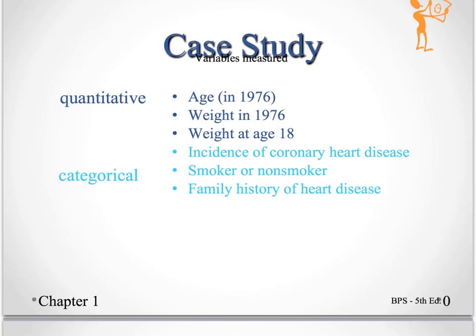Categorical variables, the ones that put these women into different groups: whether or not they had coronary heart disease, whether they were a smoker or a non-smoker, and whether there was a family history of heart disease.